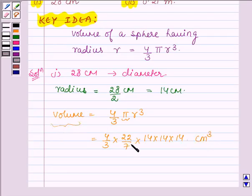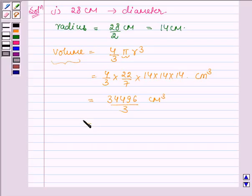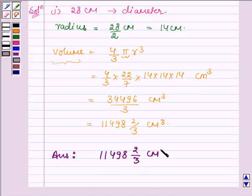So we have cm cube. And on simplifying this we get 34496 upon 3 cm cube or 11498 and 2 upon 3 cm cube. Hence the amount of water displaced by a ball of diameter 28 cm is 11498 and 2 upon 3 cm cube.